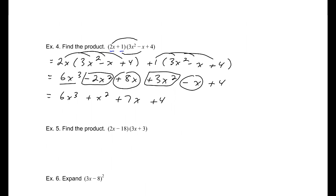Number 5, find this product. I'm going to write this out the same way that I did the last one. 2x times 3x plus 3 minus 18 times 3x plus 3. Distributing, 6x squared plus 6x minus 54x minus 54. Combining our like terms, 6x squared. That will be minus 48x minus 54. There we are.